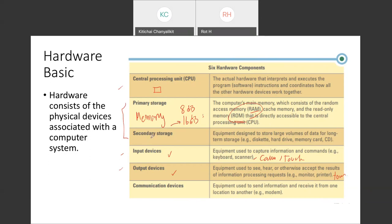Secondary storage is the device where you can keep data longer. For primary storage, when you turn off the computer and there is no electricity, the memory is gone. For secondary storage, you can save data inside a device that retains it even when turned off. Examples of secondary storage include diskettes, hard drives, memory cards, and CDs.